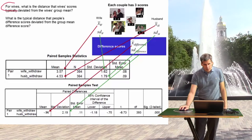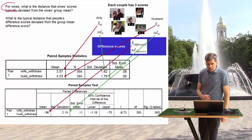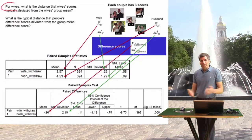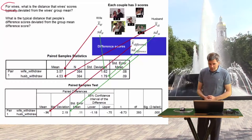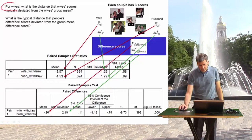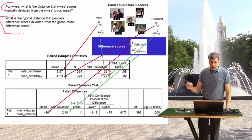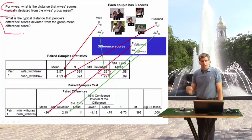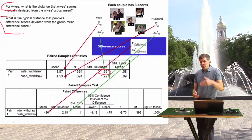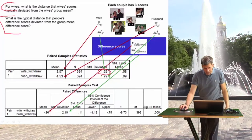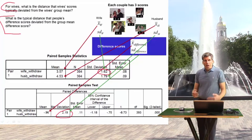If asked how far wives' scores typically deviate from the wives' group mean, that's asking for the standard deviation for wives: 1.62. If asked about the typical distance of difference scores from the group mean difference score, that's the standard deviation of the difference scores, which is 2.19 — found in the 'Paired Differences' section.